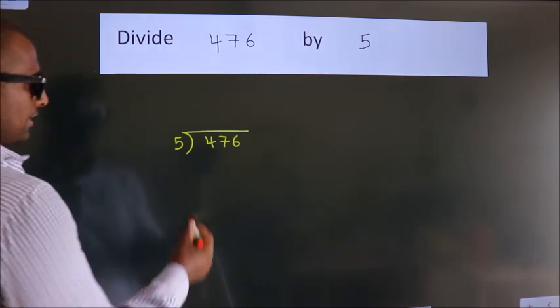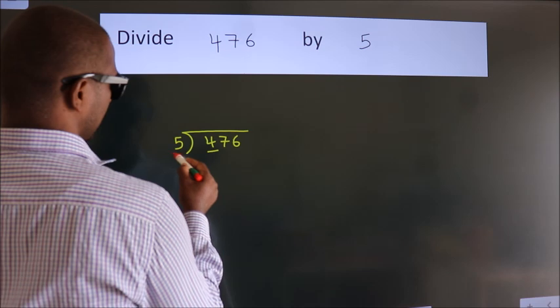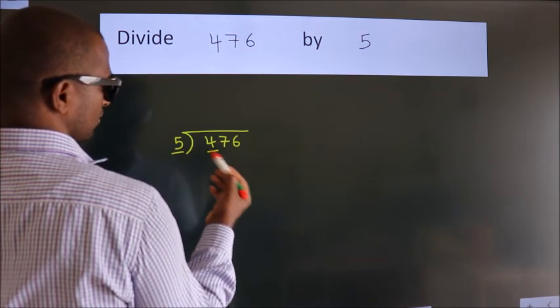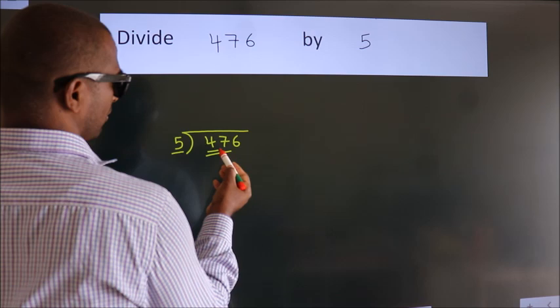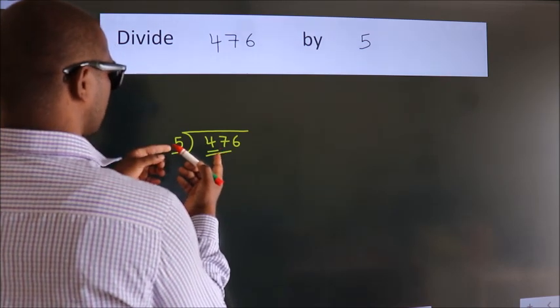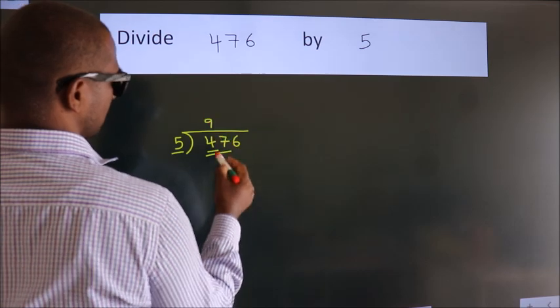Next, here we have 4, here 5. 4 is smaller than 5, so we should take 2 numbers: 47. A number close to 47 in the 5 table is 5 nines, 45.